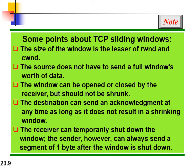Key points about the TCP sliding window: the window size is the lesser of the receiver window and the congestion window; the source does not have to send a full window's worth of data; the window can be opened or closed but shrinking is not preferable; the destination can send an acknowledgement at any time as long as it does not shrink the window; and the receiver can temporarily shut down the window, but the sender can always send one byte of data after shutdown.